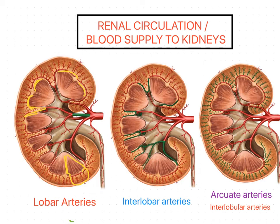In the renal sinus we can see the branches of the renal artery, tributaries of the renal vein, as well as the renal pelvis, which is divided into major calyx and minor calyx. We are discussing these parts again because the names of the arteries and veins are related to these parts of the kidney.